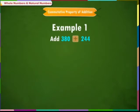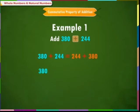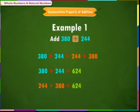Let us take one example: add 380 with 244. By commutative property we can write 380 plus 244 equals 244 plus 380. So 380 plus 244 equals 624, and 244 plus 380 also equals 624. Thus we conclude that the commutative property is applied here.